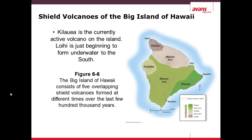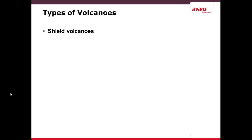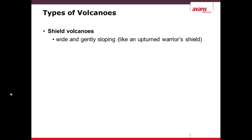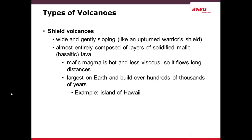These range from Kohala, the oldest, to Kilauea, the youngest, on the eastern side of the island. Shield volcanoes are wide and gently sloping — they are called shield volcanoes because they look like an upturned warrior's shield. They are almost entirely composed of layers of solidified mafic lava, which is magnesium-rich. It's very hot but less viscous, so it flows longer distances. The largest on Earth are built over hundreds of thousands of years, such as the island of Hawaii.